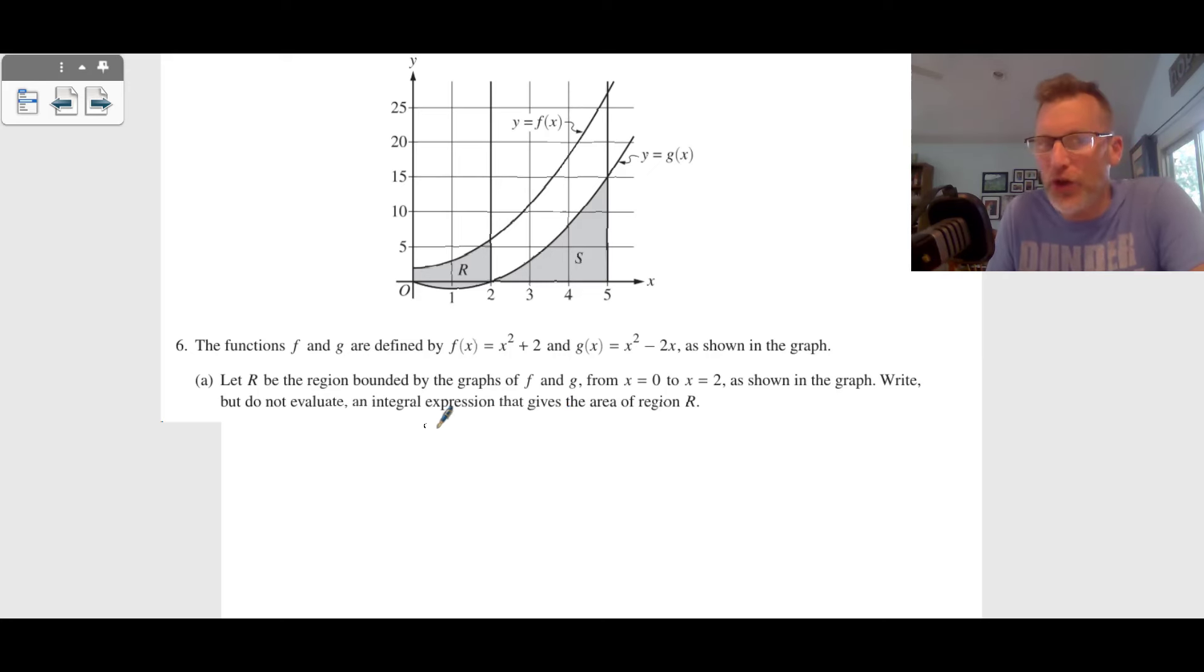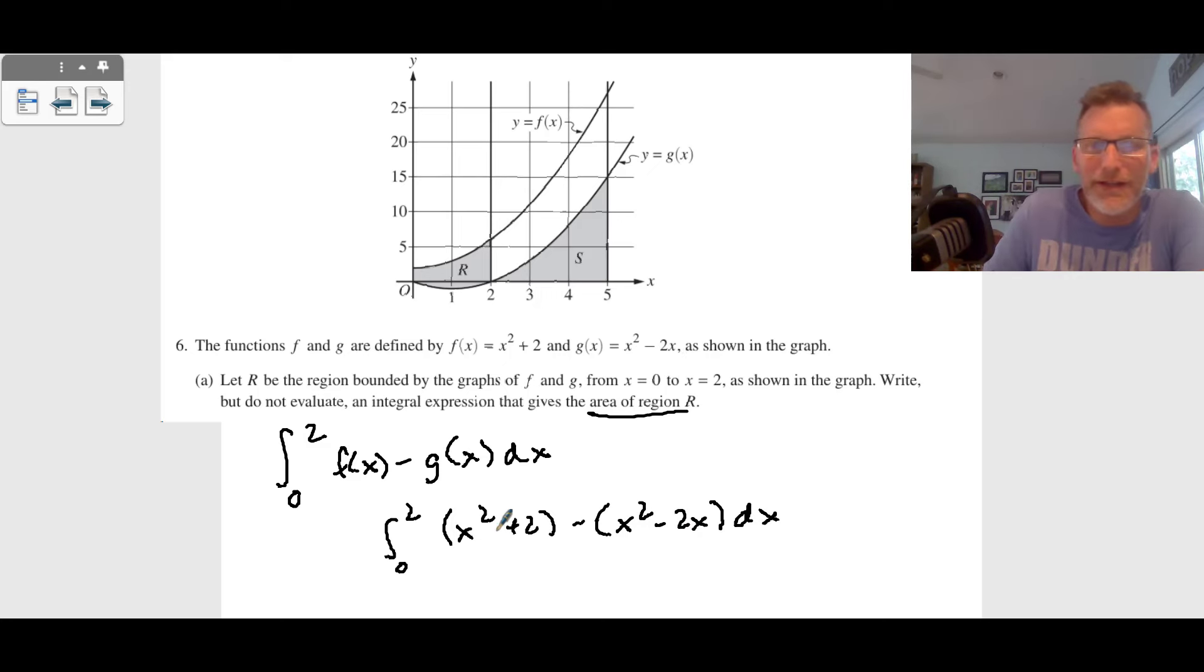So we're going to do from zero to two, and what value is on the top is f(x) minus the function on the bottom g(x) dx. We can clean that up a little bit: zero to two of f(x) is x squared plus two minus x squared minus two x dx. I wish they had us integrate this because that would have been a nice integration. You can see the x squareds cancel out, but they didn't have us integrate it. We just had to write it and not evaluate it.